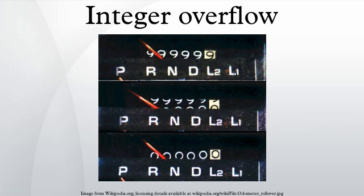Multiplying or adding two integers may result in a value that is non-negative but unexpectedly small. If this number is used as the number of bytes to allocate for a buffer, the buffer will be allocated unexpectedly small, leading to a potential buffer overflow.